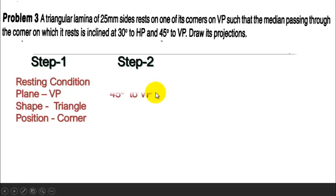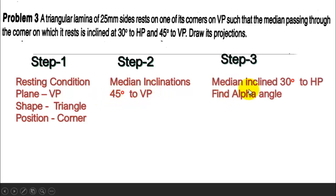Second step, they said the median is inclined. So when we start from VP, the second step is also VP inclination - that is a clue we can use here - 45 degrees to VP. And then third step, the same median is inclined 30 degrees to HP.